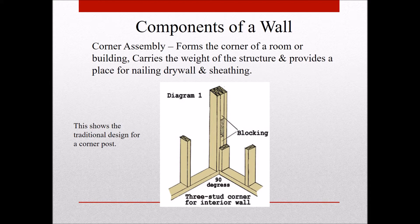Corner assembly — normally called a corner post. There's a full-length stud here, a full-length stud here, and then there's blocking nailed between the studs. This carries weight, provides a place for nailing drywall on the inside, and sheathing on the outside. Sheathing is just plywood or OSB — any kind of sheet lumber nailed to the outside of the building on the wall or roof.